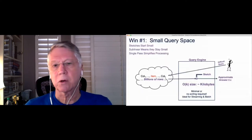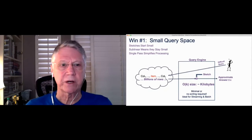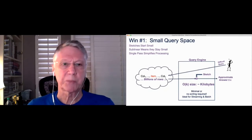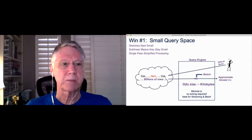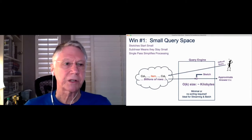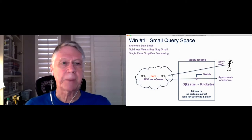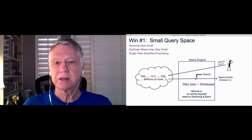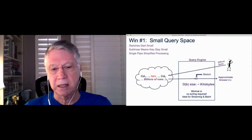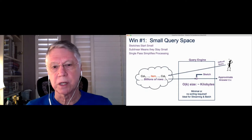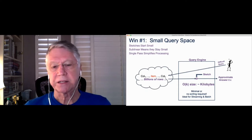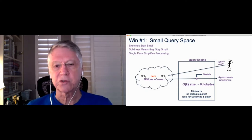The first win, of course, with sketching is that we have a very small stored space, small amount of memory requirements. They start small, sublinear means they stay small, and the single pass simplifies processing. So now instead of all this big data that you have to pull into your query engine, the sketch is orders of magnitude smaller. And because it is much smaller, that means it can process itself much faster. Because the less data it has in it, the faster it can process the data.